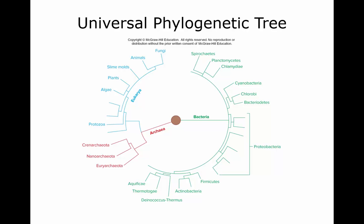This is the universal phylogenetic tree. You can see over here in blue — that's your Eukarya. Here's your Archaea in red. And then over here in the green, that's all your Bacteria.